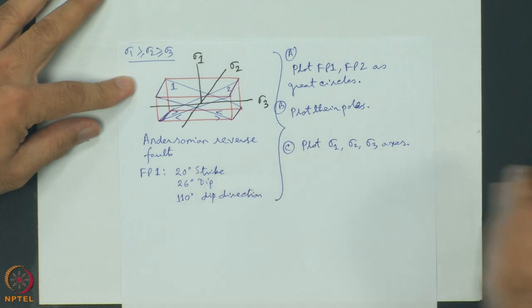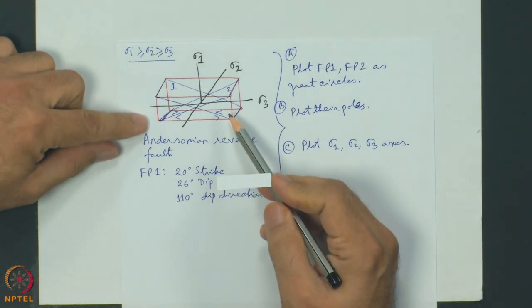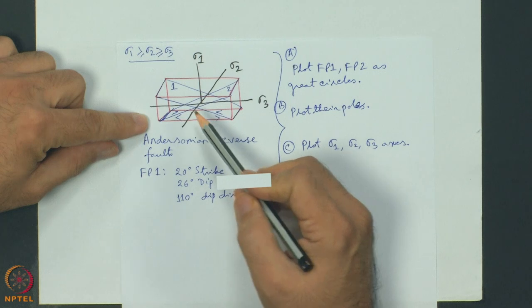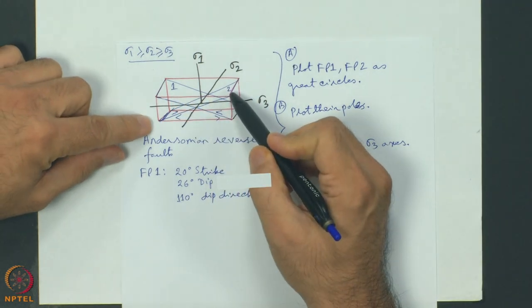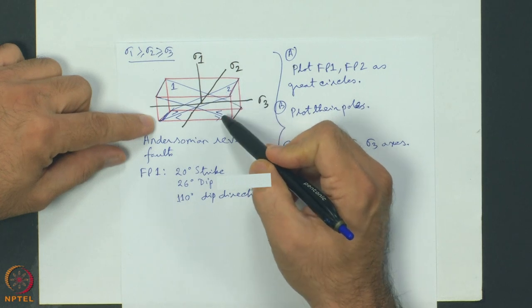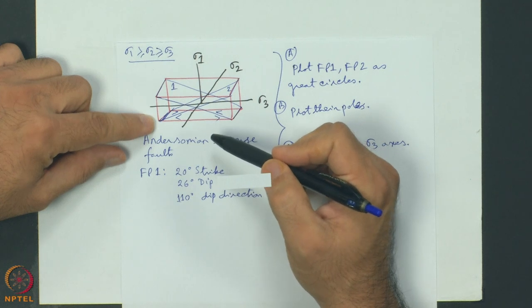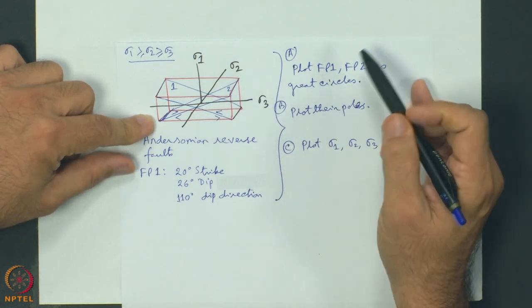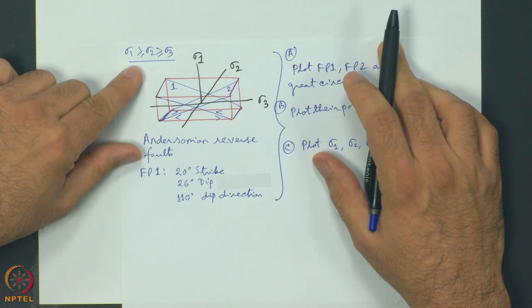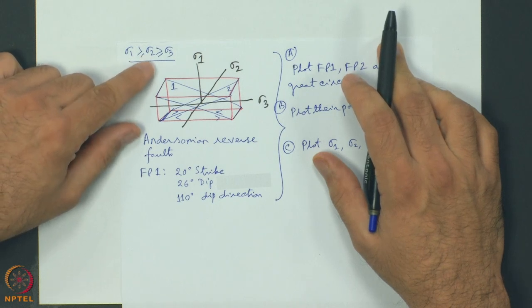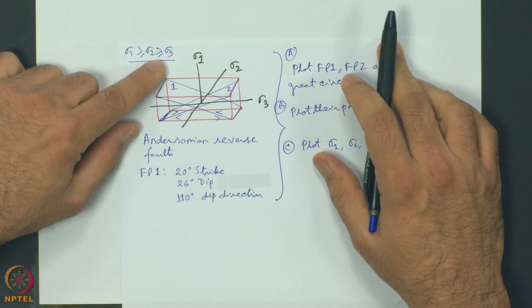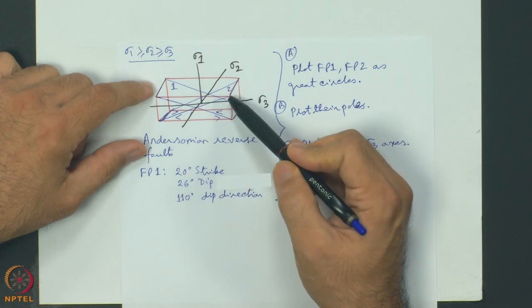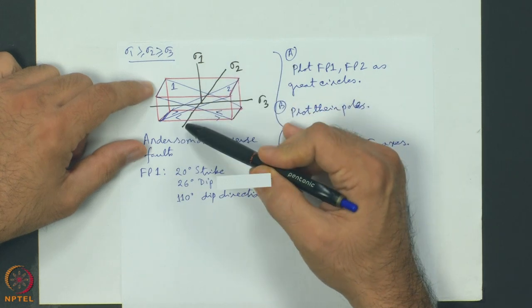I start with the Andersonian reverse fault. I have made a sketch - I have drawn a cuboid with two blue diagonals 1 and 2 which are the conjugate reverse faults. The reverse fault symbols are given. It has already been explained that with principal stress axis sigma 1 ≥ sigma 2 ≥ sigma 3, the intersection between the two faults 1 and 2 is given by the sigma 2 stress axis.